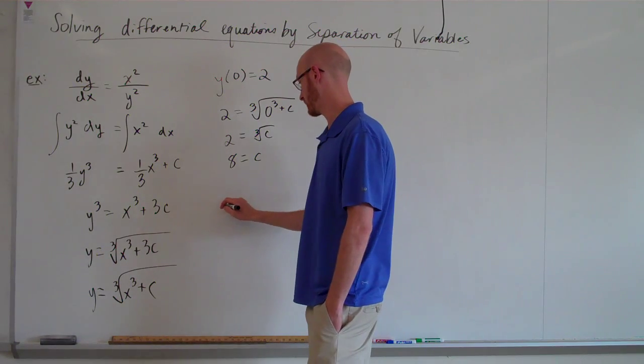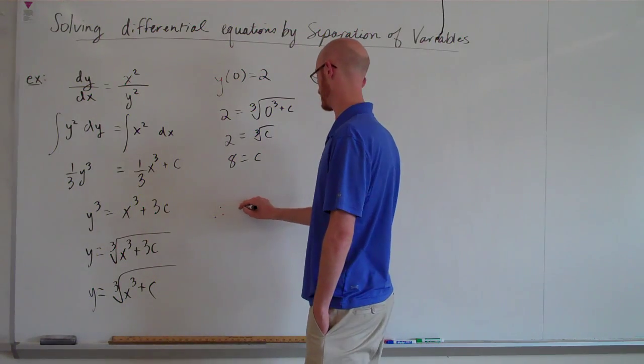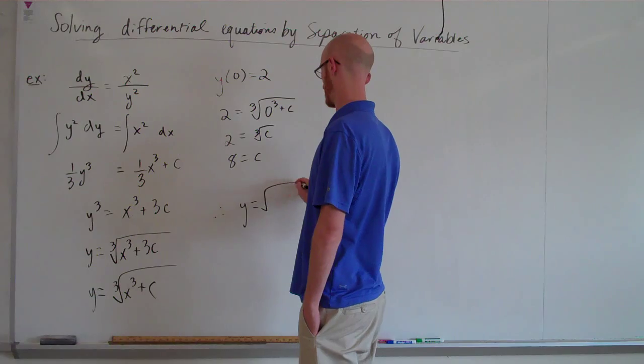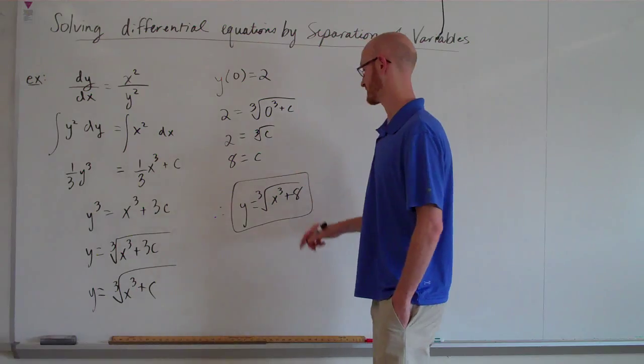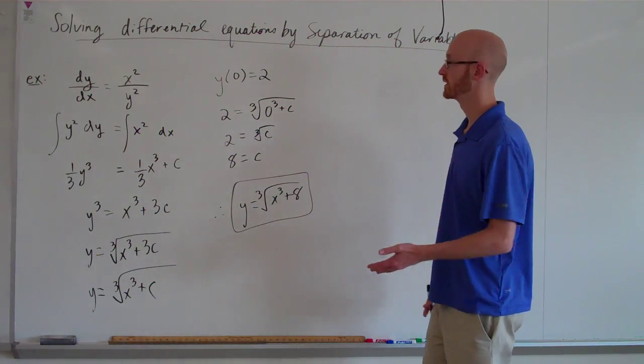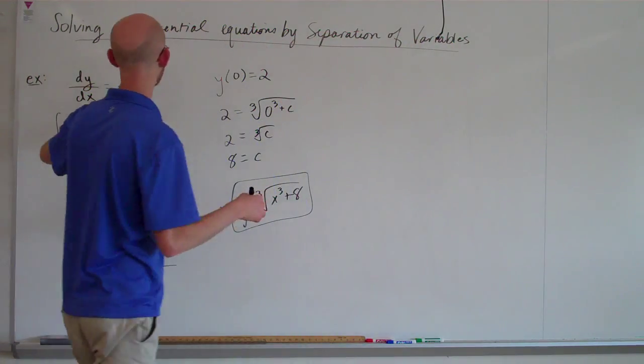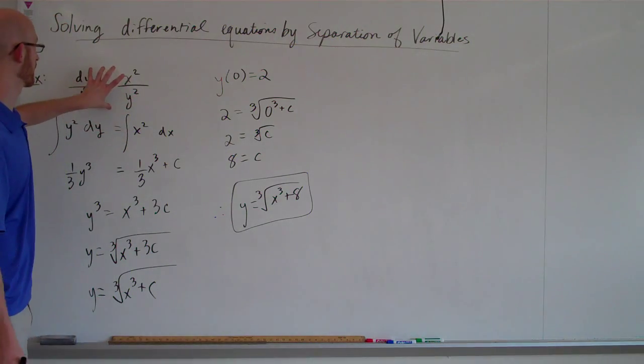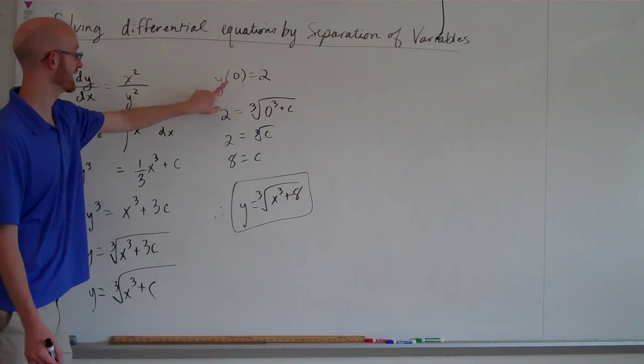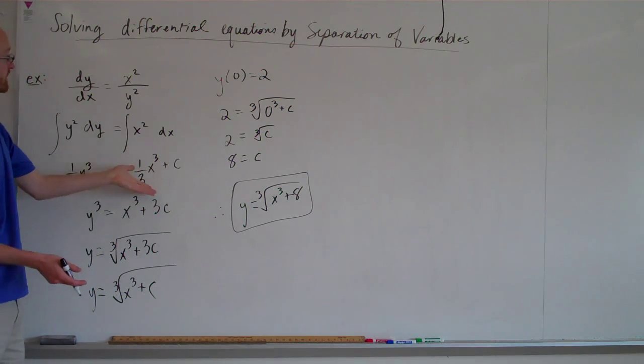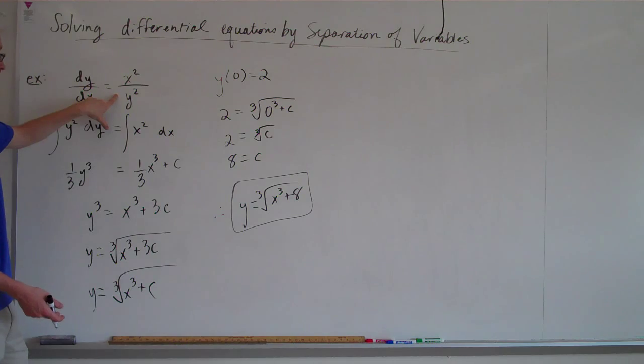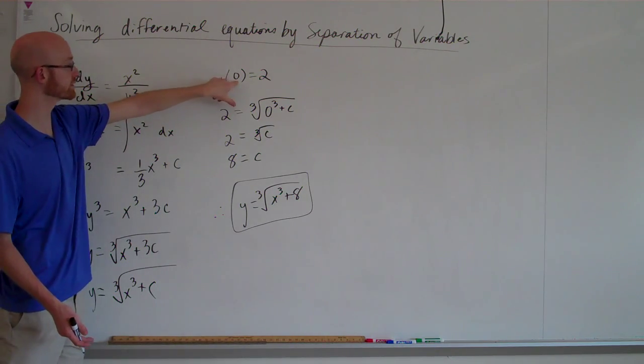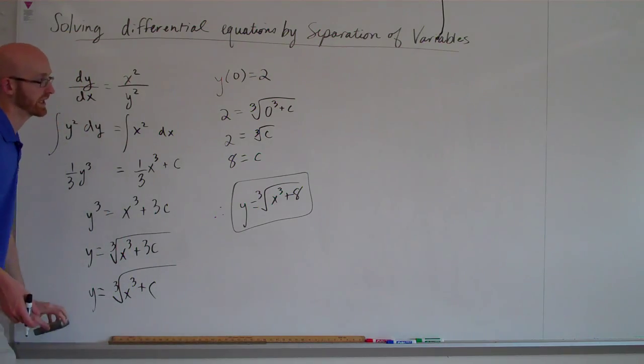So now we get our function to simply be y equals cube root of x cubed plus 8. So this is the specific solution to the differential equation represented by that information. In other words, we found a function such that if you took the derivative of this, you would get this. And if you substitute 0 into it, you get 2.